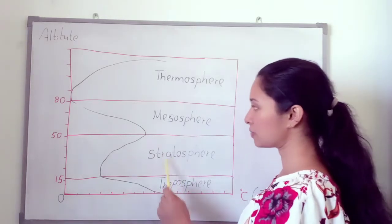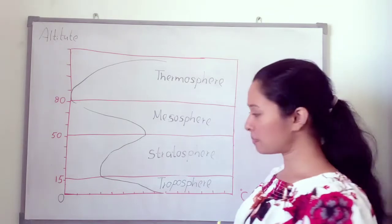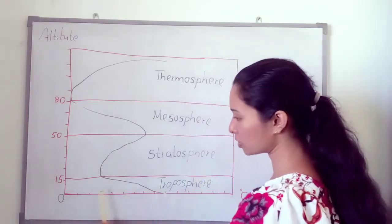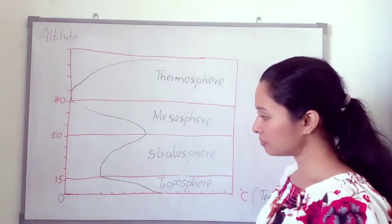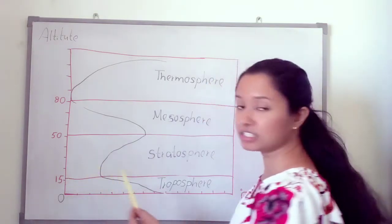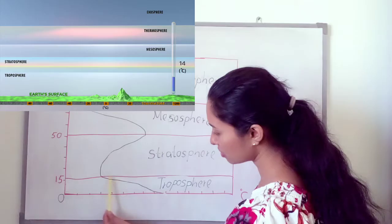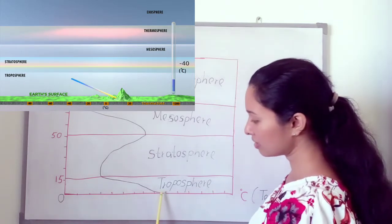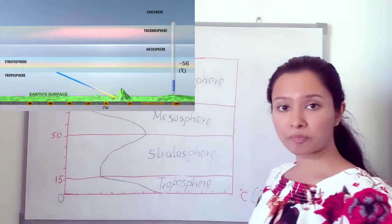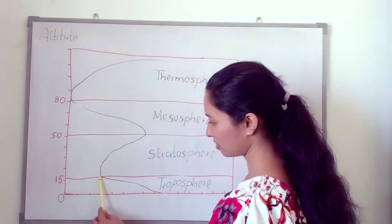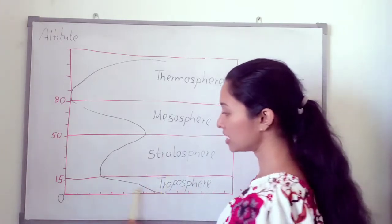The layers shown are troposphere, stratosphere, mesosphere, and thermosphere. In the troposphere — the first layer where we live — when altitude increases, temperature decreases.